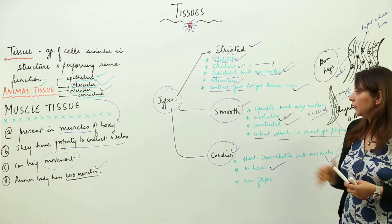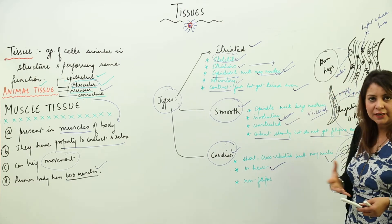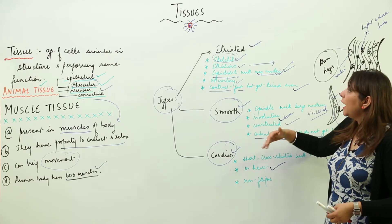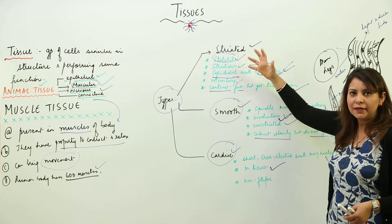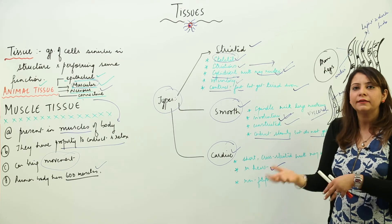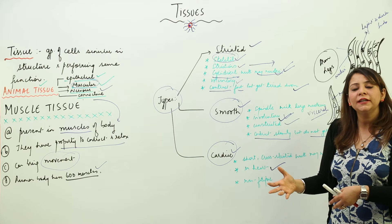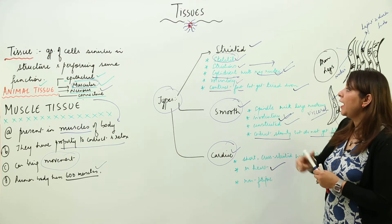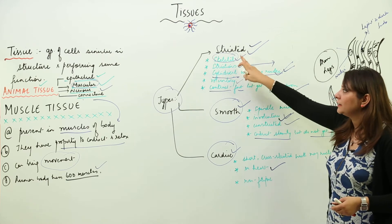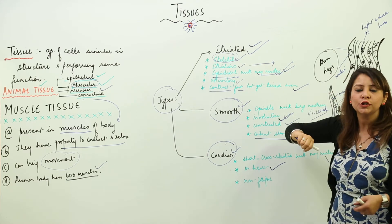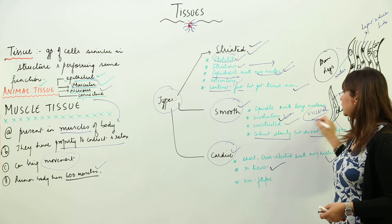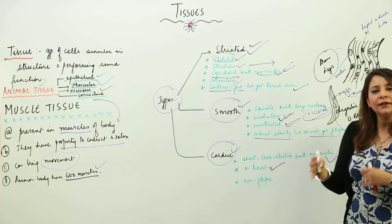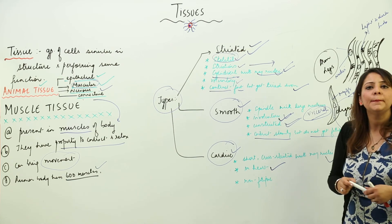Go through the muscle tissue once, try to draw diagrams, and learn the different names. Striated muscle is also called skeletal muscle and voluntary muscle. Smooth muscle is also called visceral muscle and unstriated muscle. You should know the alternate names as well, because exam questions may refer to skeletal muscle or visceral muscle, so you should be aware of which is which.